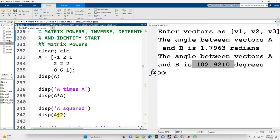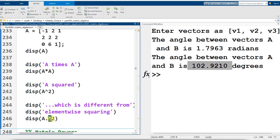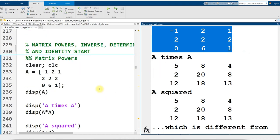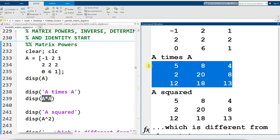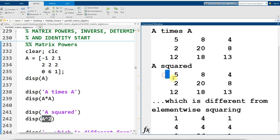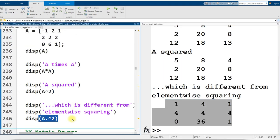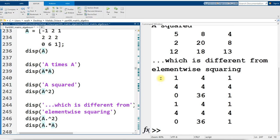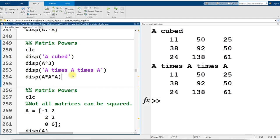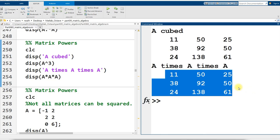The first thing I want to show you is distinguishing between the carat, the exponent symbol, and the dot carat or element-wise squaring symbol. I've got this matrix with some arbitrary numbers, and when I multiply that matrix times itself using matrix multiplication I get this result, which is the exact same thing that I get if I square it using matrix squaring. But it is different than element-wise squaring. In the same way that A cubed is the same as A matrix multiplied times A matrix multiplied times A again.